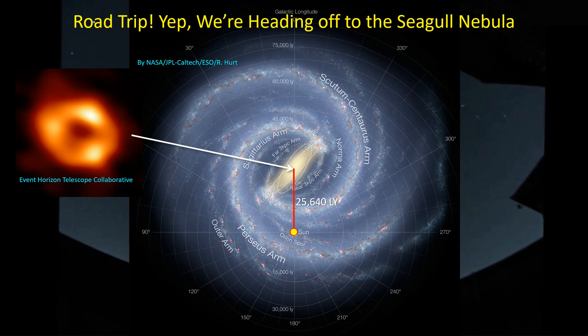It's always interesting to take a look at where these targets are that we photograph — not just the RA and declination, but how far away they are within our galaxy. We are down here at the center of this galactic longitude plot for our galaxy. Galactic longitude zero degrees points us right back to the center of the galaxy, where we have our friendly neighborhood black hole.